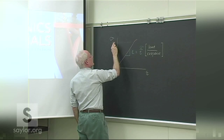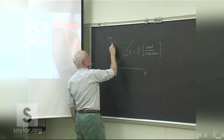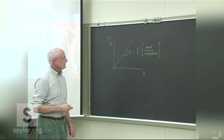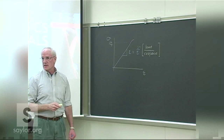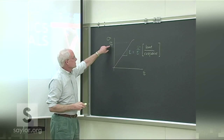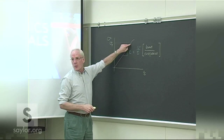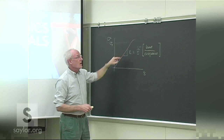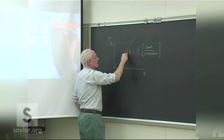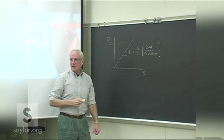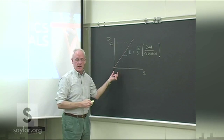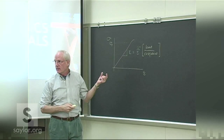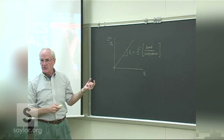Somewhere up along the curve where the linear portion starts to disappear, we call that the yield stress — a characteristic of the material indicating how much stress it can take before it yields. Beyond that point, if we release the load we come down in an essentially parallel region, but now there's residual strain even when the load is fully removed. There's some permanent plastic deformation in the material.